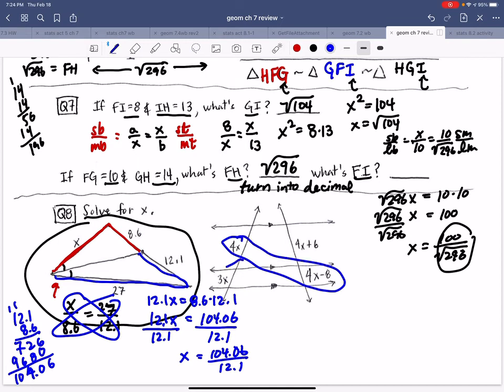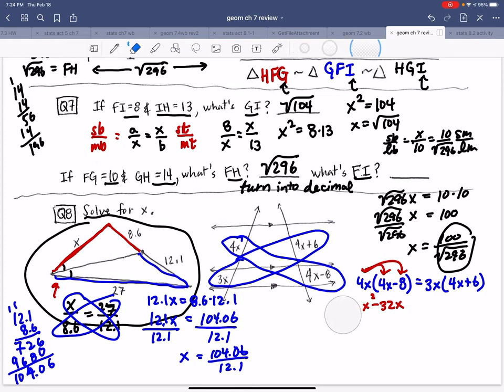So last question. Let's cross multiply here to solve. We're going to distribute, making sure to distribute everything. 4 times 4x, 4x times 4x is 16x². So that's 16x² minus 32x. Now, this is 12x² and this is 18x.